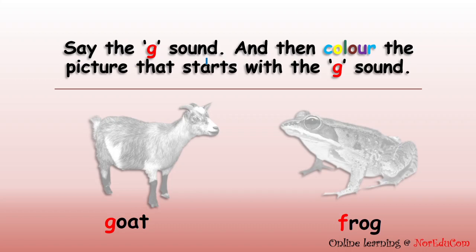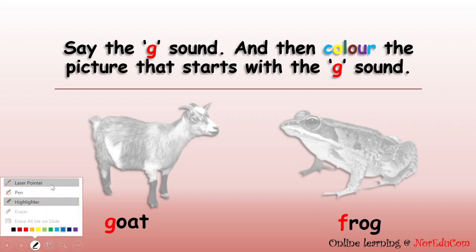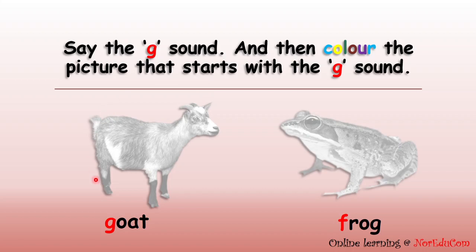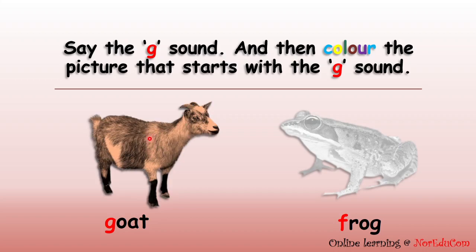Now let's say the G sound and then colour the picture that starts with the G sound. Can you name this animal? Yes, this is a goat. G, g, goat. It starts with the sound of G, letter G. So let's colour it. Can you name the last picture? Yes, this is a frog. F, f, frog. It starts with the letter F, sound of F — not sound of G. So do not colour it. Well done, everybody.